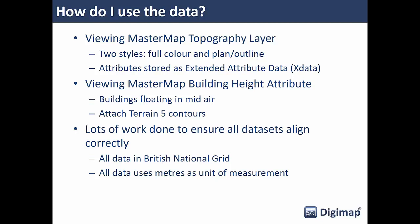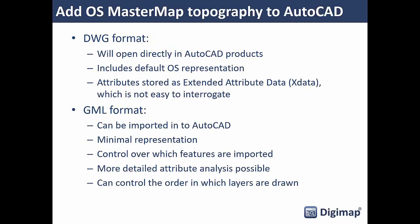For adding MasterMap to AutoCAD, you have two options. You can use the DWG format — just open it straight in AutoCAD with the default representation using Ordnance Survey's standard colors, though attributes are stored as X data and are less easy to interrogate. Alternatively, import the GML format of MasterMap, which is the native interchange format from Ordnance Survey. It comes through with minimal representation but gives more control over which features are imported and how attributes are handled.